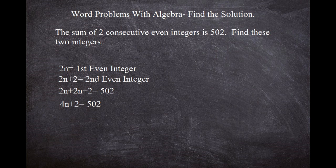So the way we're going to do that is we're going to subtract by two on both sides, leaving us with 4n = 500. Now to find n, all we have to do is simply divide by four on both sides.